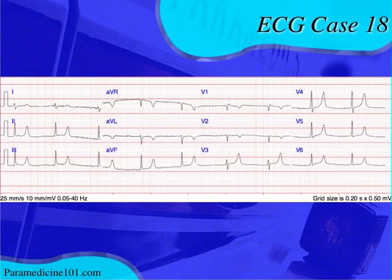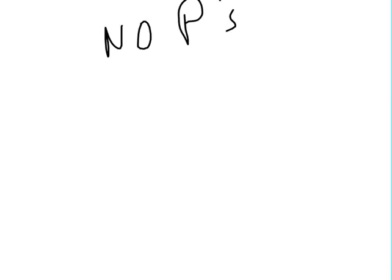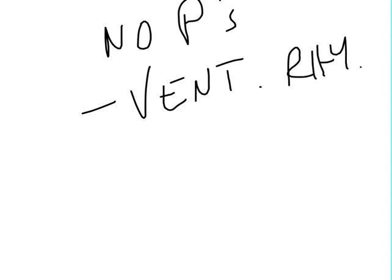If you take a look at this EKG, the first thing you want to look at is the rate and the rhythm — don't skip that. You may notice that you don't see P waves before the QRS complexes. Not seeing P waves before the QRS complexes can be concerning, so there are a few things in a differential I want you to consider when you don't see P waves. First thing you should consider: is it a ventricular rhythm? That should be at the very top of your list. When we look back at the EKG, you'll see the QRS is narrow, so it's not a ventricular arrhythmia.